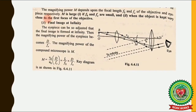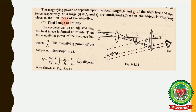From this equation, the magnifying power of a compound microscope depends upon the focal lengths of the objective and the eyepiece. M is large if F₀ and Fₑ are small — meaning smaller focal lengths of both lenses give greater magnification. Also, when the object is kept very close to the first focus of the objective, the distance between the object and the objective lens is small.